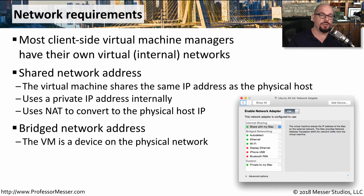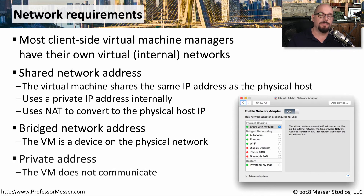This effectively performs a network address translation function to be able to use and share that single IP address. You could also configure a virtual machine to have its own IP address rather than sharing a single NATed address — this would be a bridged network address, and it would allow the VM to have its own unique addressing. Some virtual machines can also be configured with a private address that doesn't communicate to anyone, which is very common in a test environment.